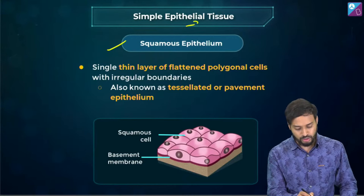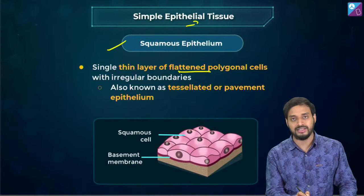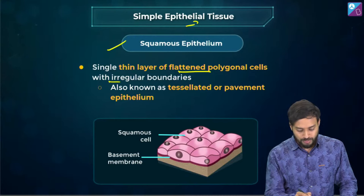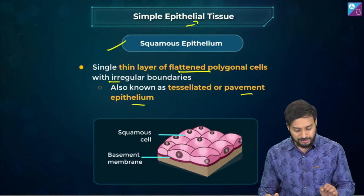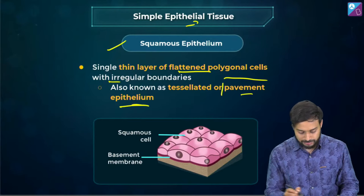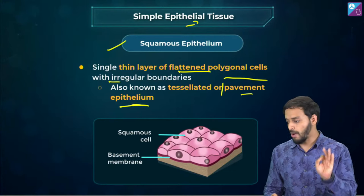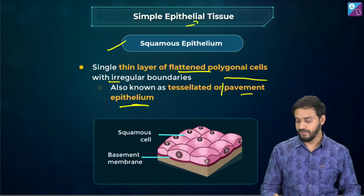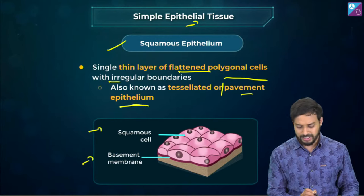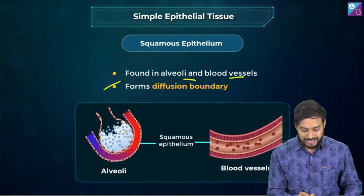Squamous epithelium — I am talking about simple epithelial tissues, specifically squamous epithelium. It is a single thin layer of flat polygonal cells with irregular boundaries. They are also called pavement epithelium — this is a commonly used and important term, so please note it. You can see the polygonal irregular shape and the basement membrane in the image.